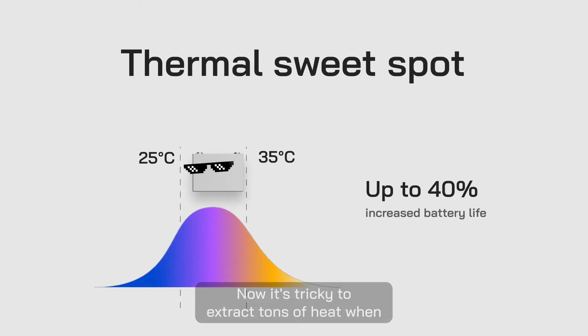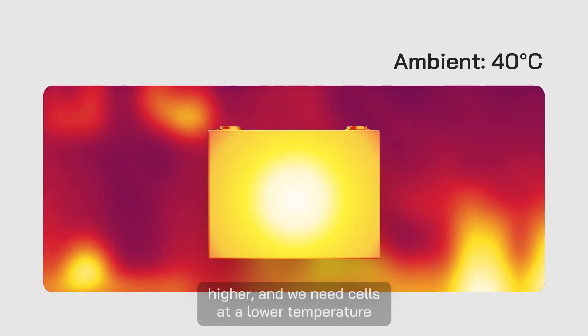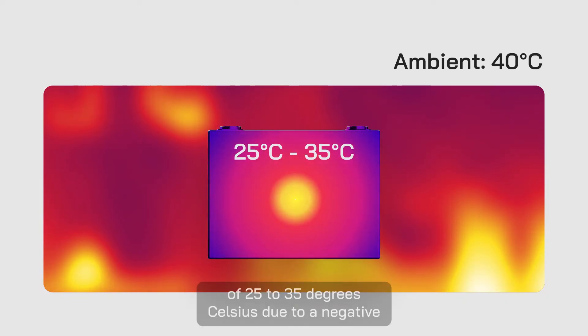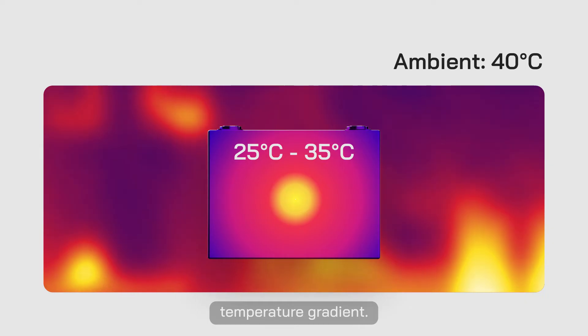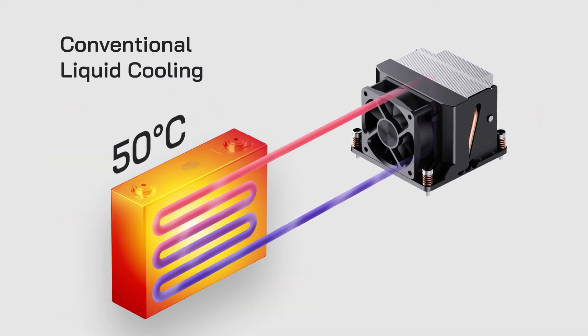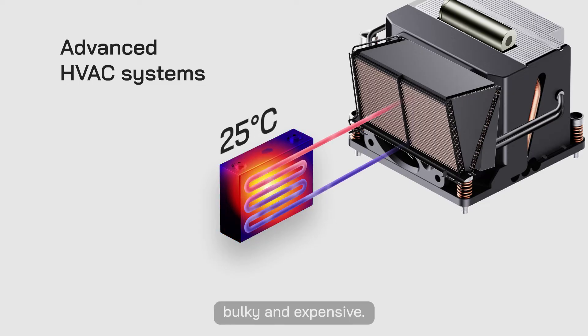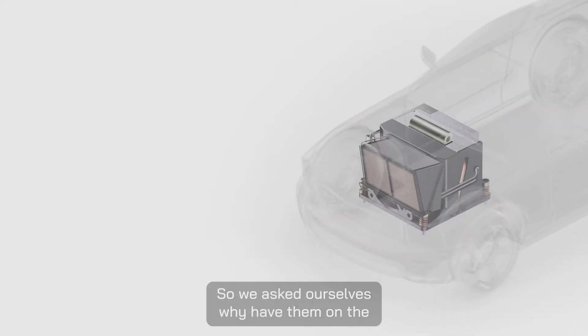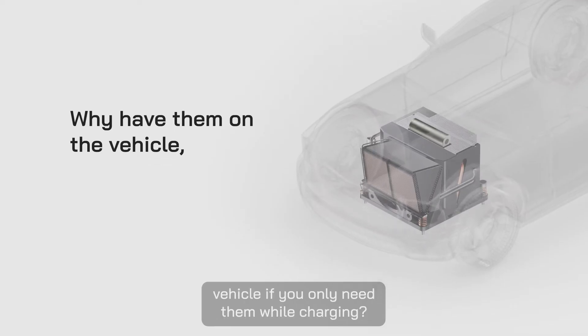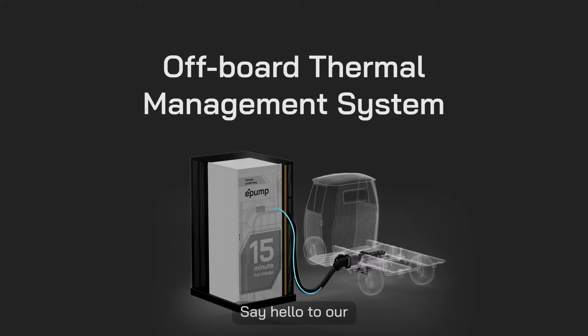Now, it's tricky to extract tons of heat when the ambient temperature is 40 degrees Celsius or higher and we need cells at a lower temperature of 25 to 35 degrees Celsius. Due to a negative temperature gradient, conventional liquid cooling doesn't cut it. We need advanced HVAC systems which are bulky and expensive. So we asked ourselves, why have them on the vehicle if you only need them while charging? Say hello to our off-board thermal management system.